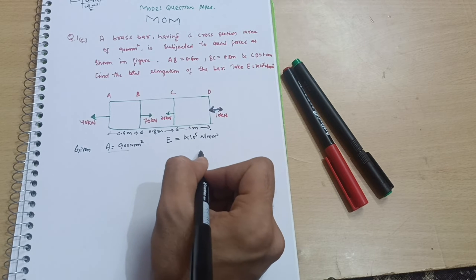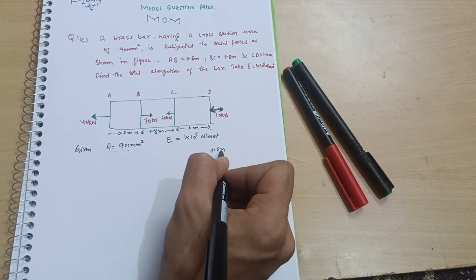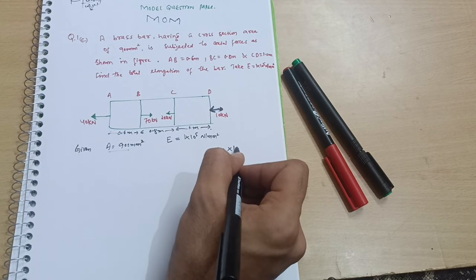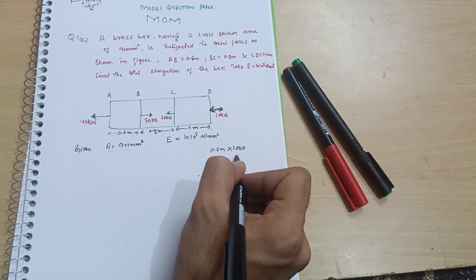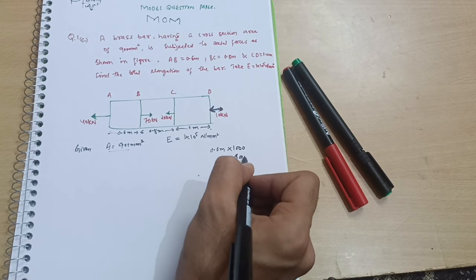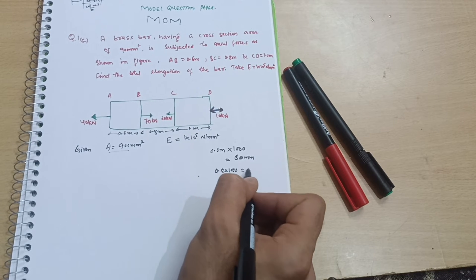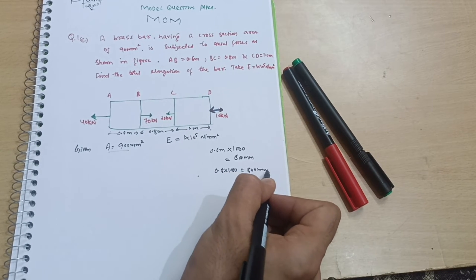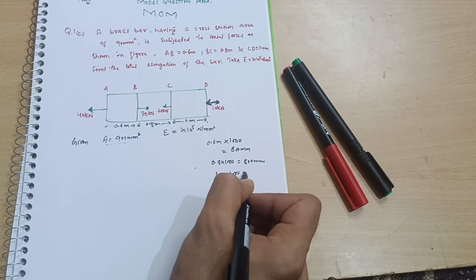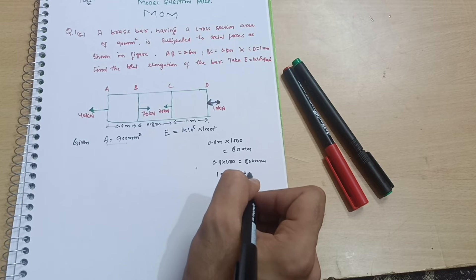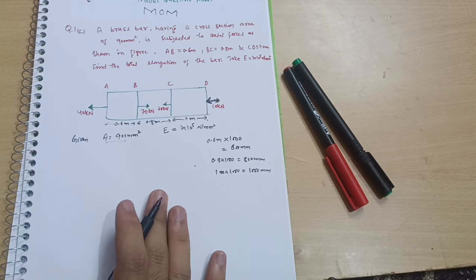Converting lengths: 0.6 m × 1000 = 600 mm, 0.8 m × 1000 = 800 mm, and 1 m × 1000 = 1000 mm.